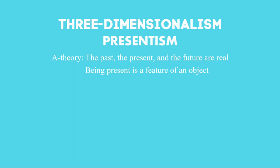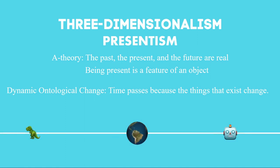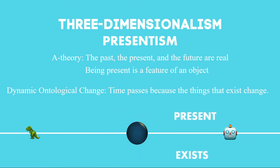Finally, concerning temporal passage, three-dimensionalism holds a dynamic ontological change view. This sounds complicated, but it is very easy to understand. The idea is that time passes because what is present — the things and events that exist — change. So, in a prior present, things like the dinosaur existed. Now, we are a tiny part of the things that exist. However, in the future, instead of us, new things will exist, and these new things will also be in the present.